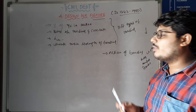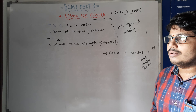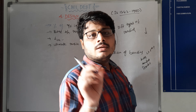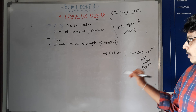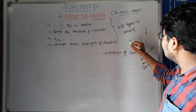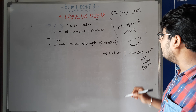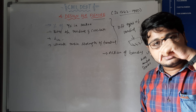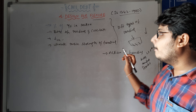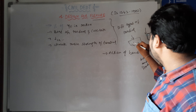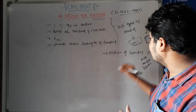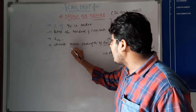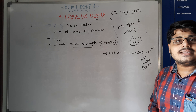Next, the ultimate tensile strength of tendons. Cracks will be formed in the member due to tensile load, vertical shear load, or some other load. The pre-stressed members inside pre-stressed concrete are tendons, and the design depends upon the ultimate tensile strength of those tendons.